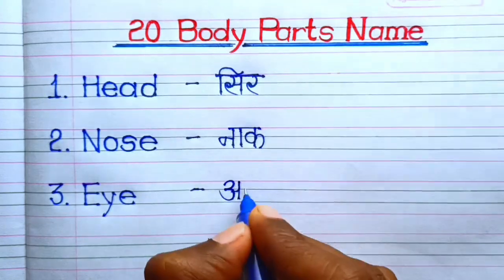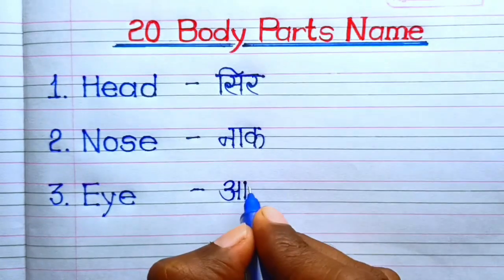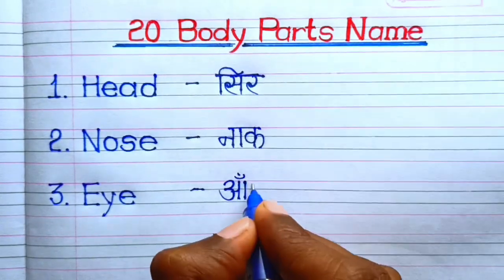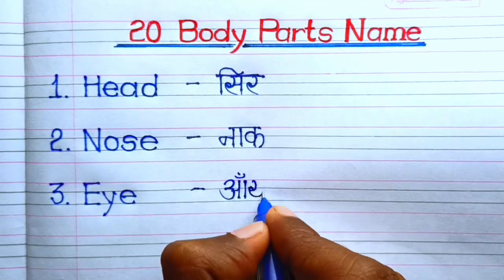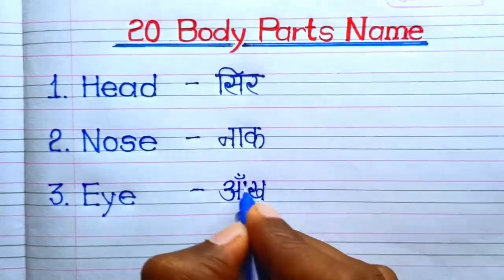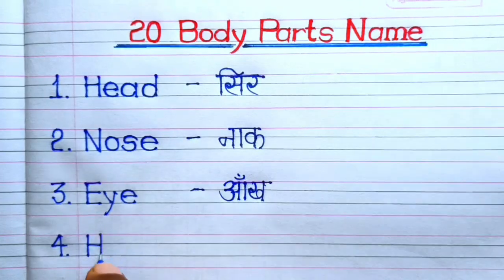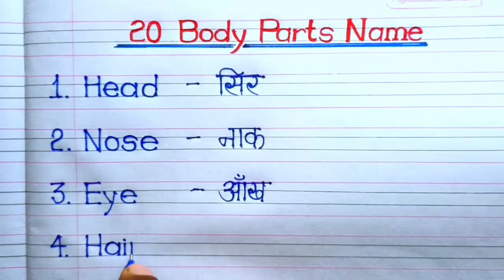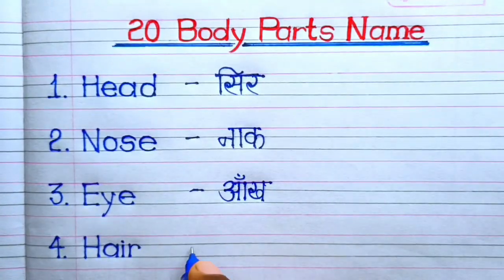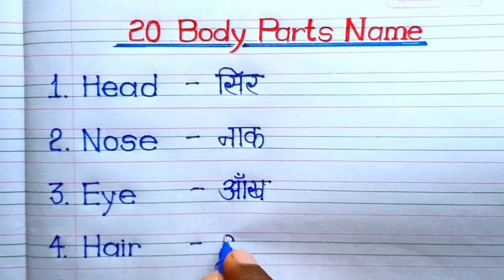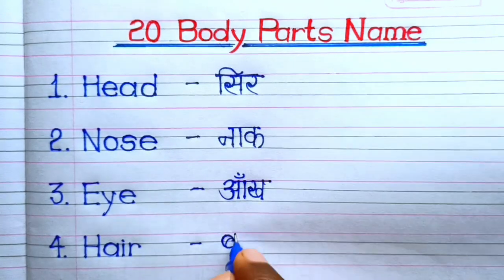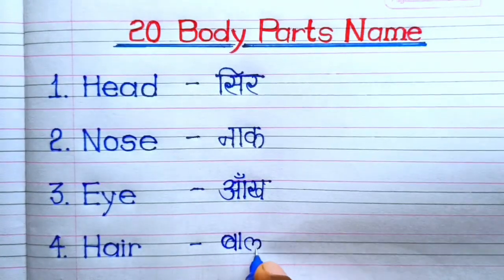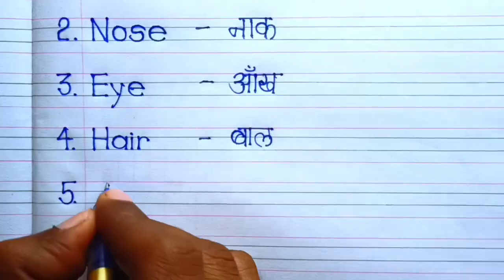Number 3. Eye — Eye means act. Number 4. Hair — Hair means ball.